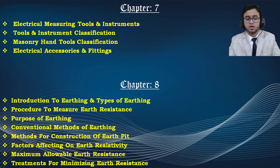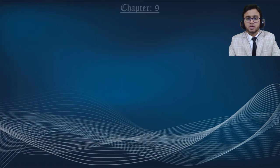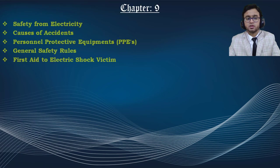Chapter 8 covers earthing — what is meant by earthing, the different types of earthing, how to measure the earth resistance value, the main purpose of providing earthing, and the conventional methods for construction of earthing. We also discuss the 10 factors affecting earth resistivity, maximum allowable earth resistance as per standards, and treatments for minimizing earth resistance.